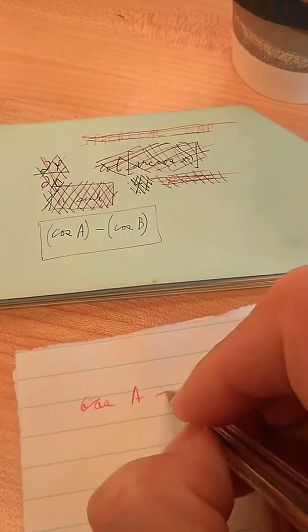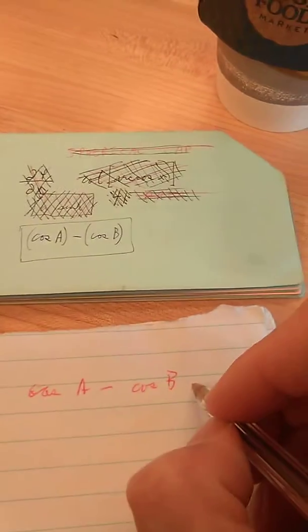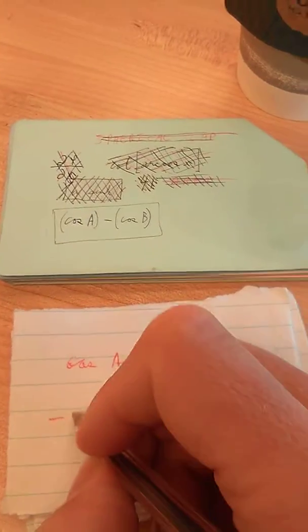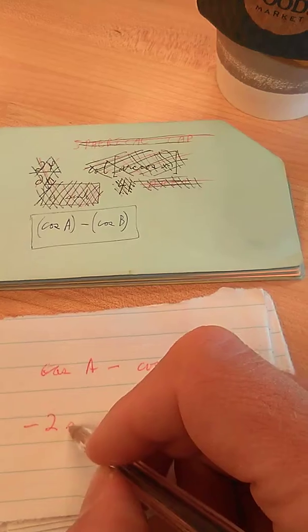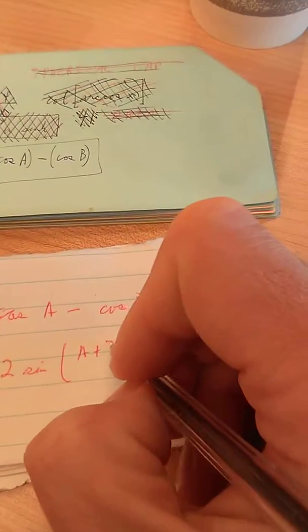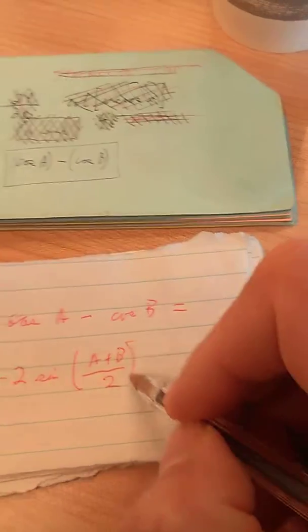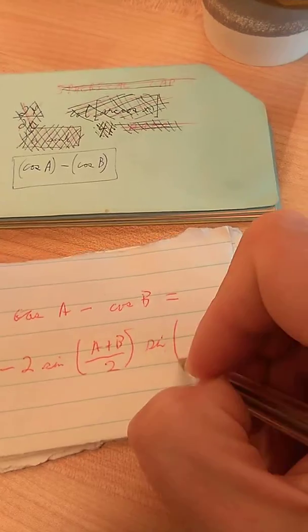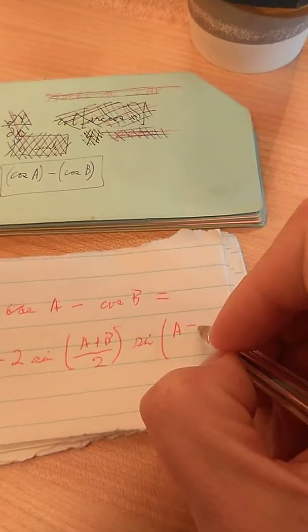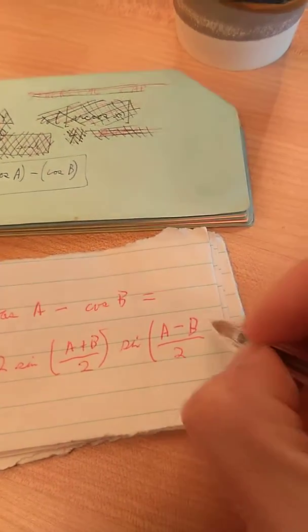Cosine of A minus cosine of B equals negative 2 sine of A plus B over 2 times sine of A minus B also over 2.